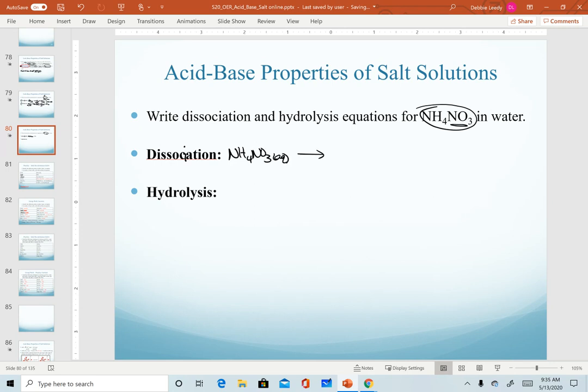NH4NO3. Again, it's a soluble salt, meaning it's going to completely dissociate into its ions. We get the ammonium ion and the nitrate ion.